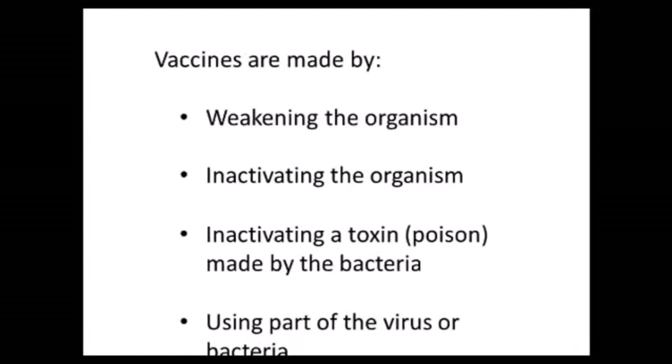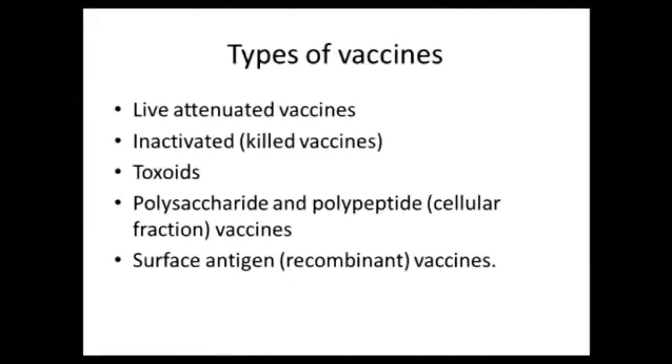On the basis of these methods of preparation, we have different types of vaccines. The first type is live attenuated vaccines, whereby we weaken the organism. The second type is inactivated or killed vaccines, wherein the organism is killed. Please remember that in both the live attenuated and the inactivated variety, the antigenic properties are still retained.